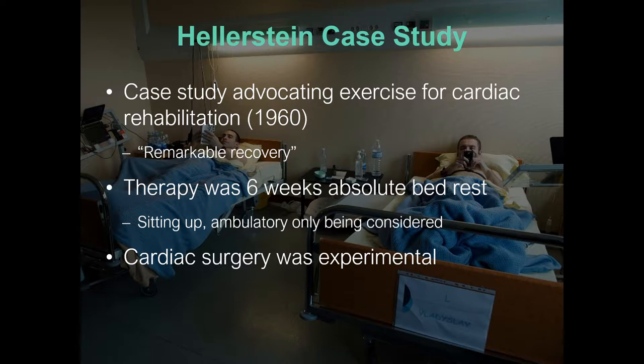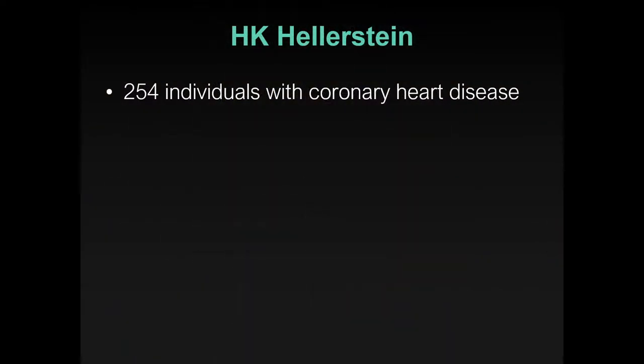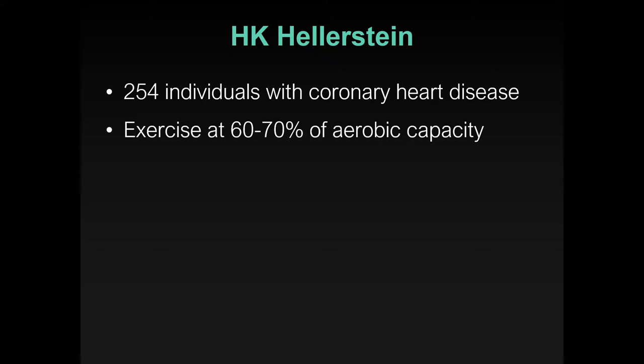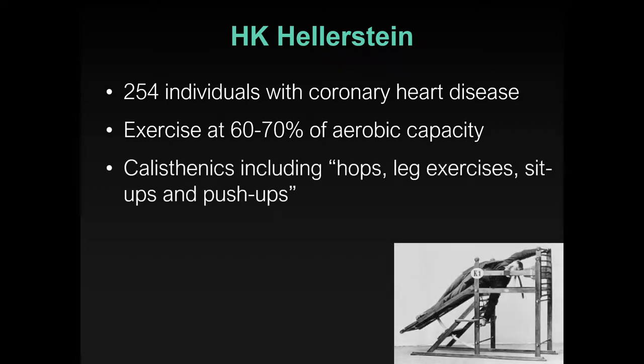This was the situation when Hellerstein presented exercise as a potential therapy — radically different from what anyone would have suggested. In 1960, a few patients showed remarkable recovery, leading to a more formalized investigation with 254 individuals recruited with coronary heart disease. They exercised at 60 to 70 percent of their aerobic capacity — moderate intensity — described in the paper as calisthenics, hops, and leg exercises.